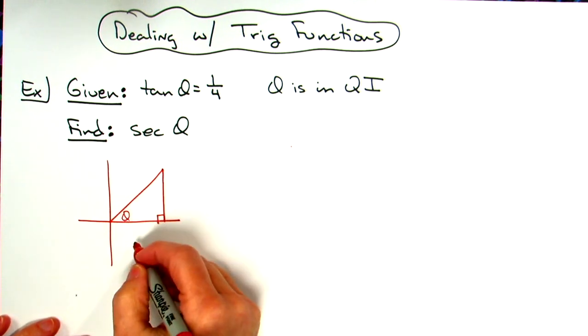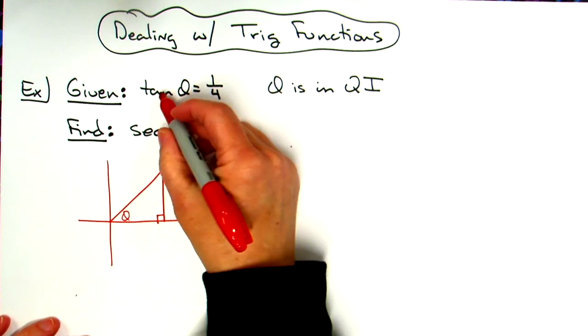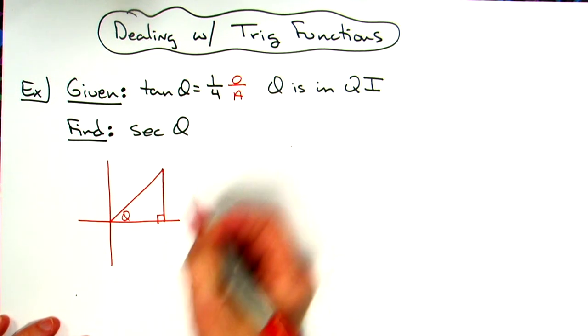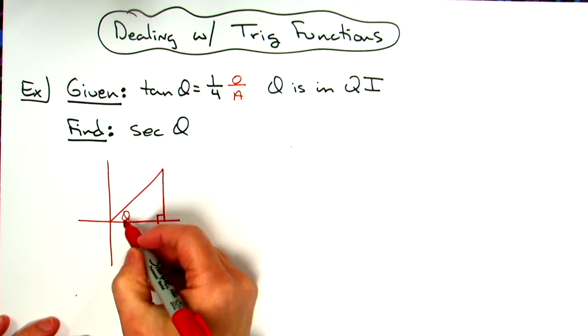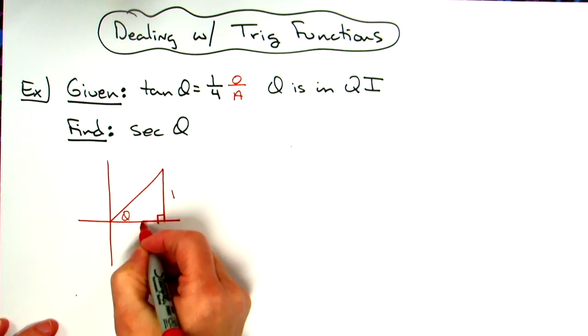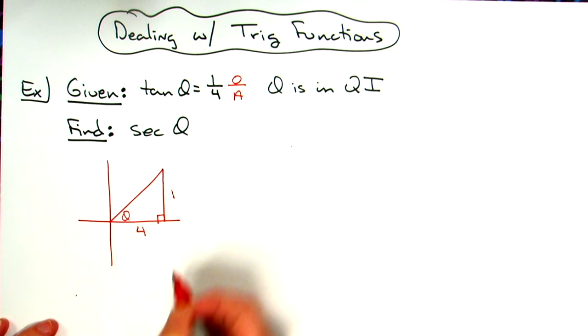I can label the sides of this triangle. So I would come up here, look at tangent. I know tangent is opposite over adjacent. So that's going to tell me a couple sides here. My opposite side then is going to be a one. My adjacent side here is going to be a four.